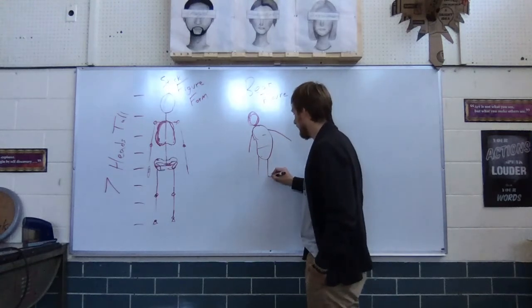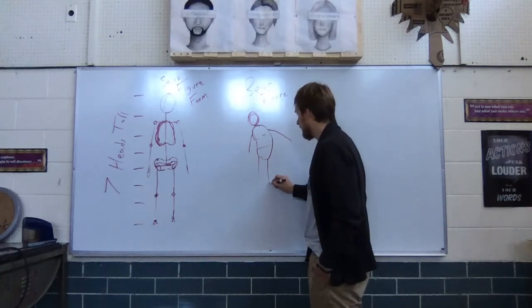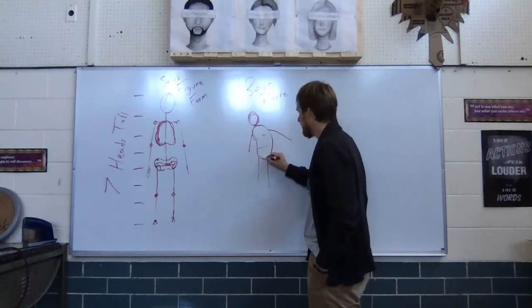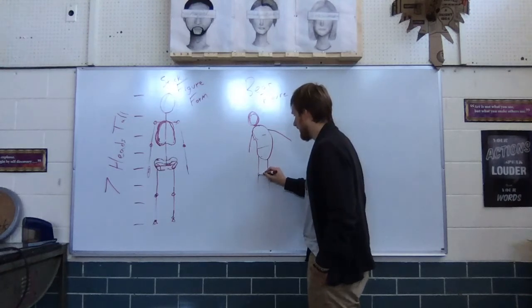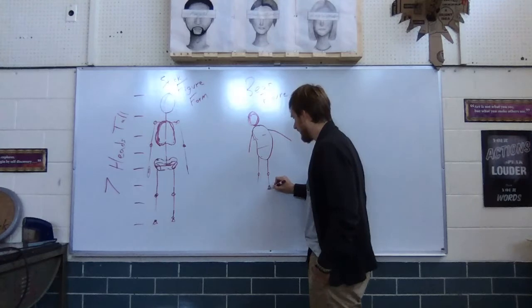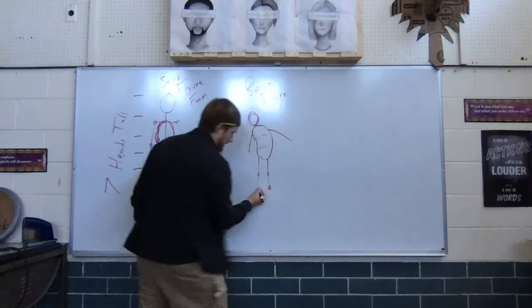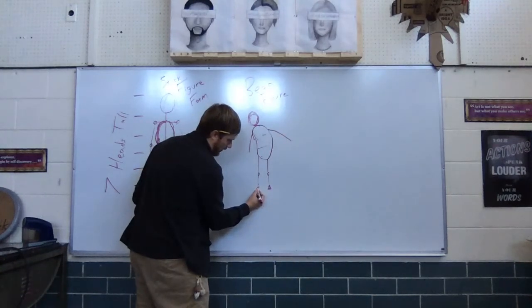So one thing we will need to do as we build this up is we're going to need to make these legs longer. If we think from four, five heads down we're hitting in the mid thigh, and so our knees are going to fall beneath that and then we're going to come down. This leg is probably about the right size. This leg we're going to hold down a little bit further.